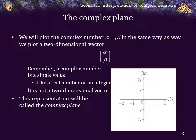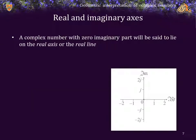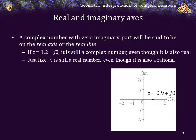Now, this representation in this format is said to be called the complex plane. Let's go a little bit more into depth, into what the components are. Now, a complex number with a zero imaginary part is said to lie on the real axis. So, any point on that line is said to be real, and it has a zero imaginary part. So, for example, 0.9 plus j times 0, or just 0.9. Now, remember, a value like z equals 1.2 plus j times 0 is still a complex number, even though it is also real. Just like one-half is still a real number, even though it is also rational.